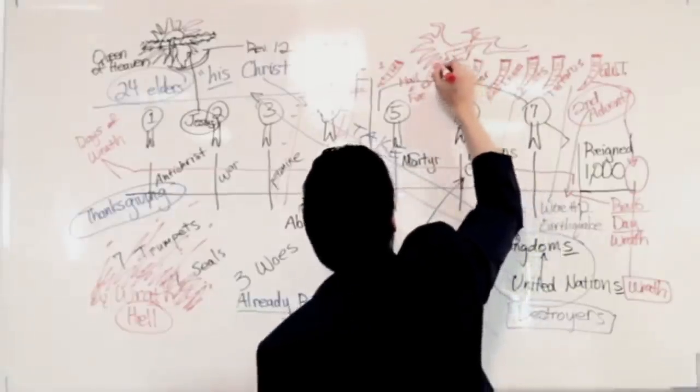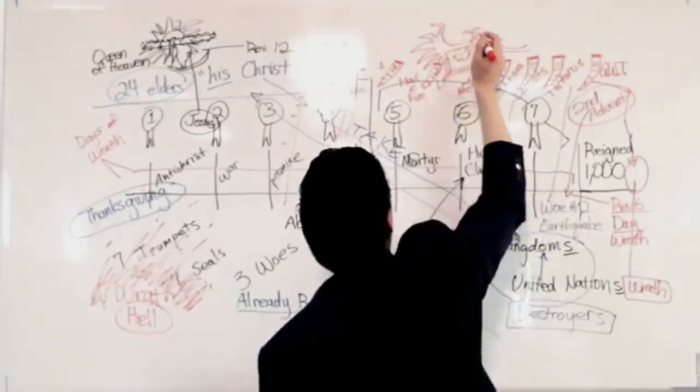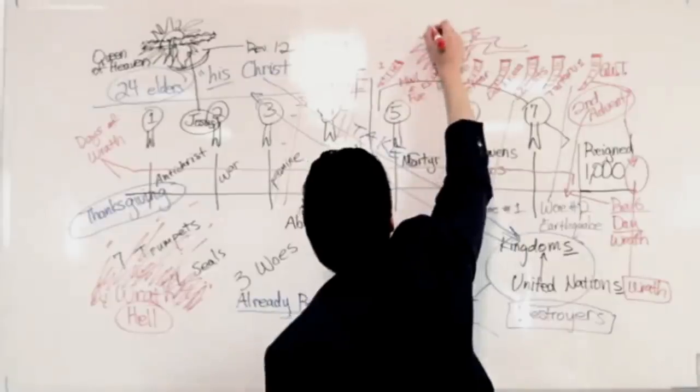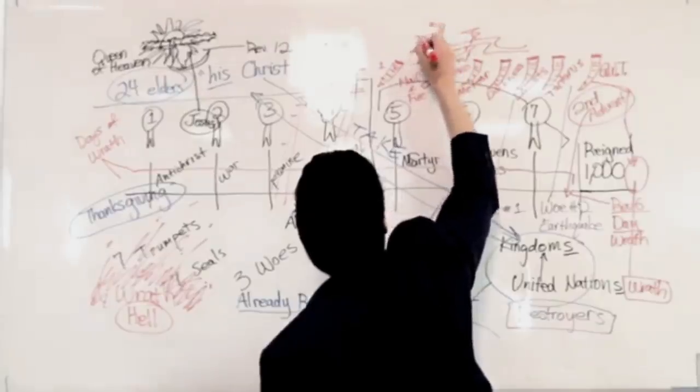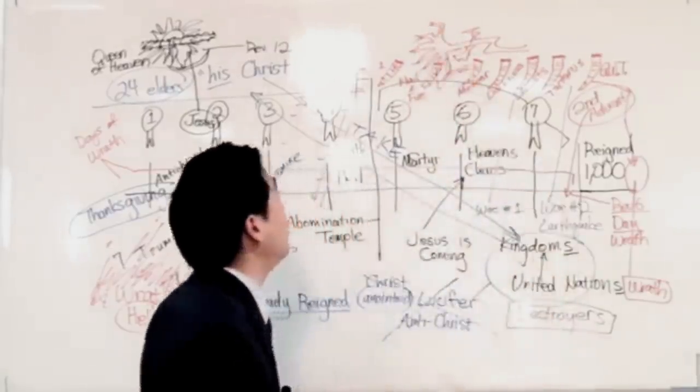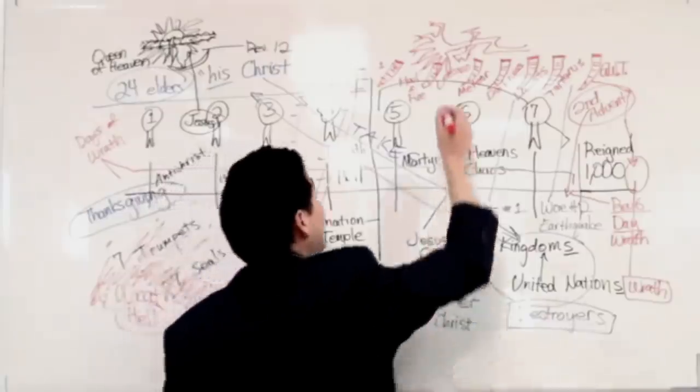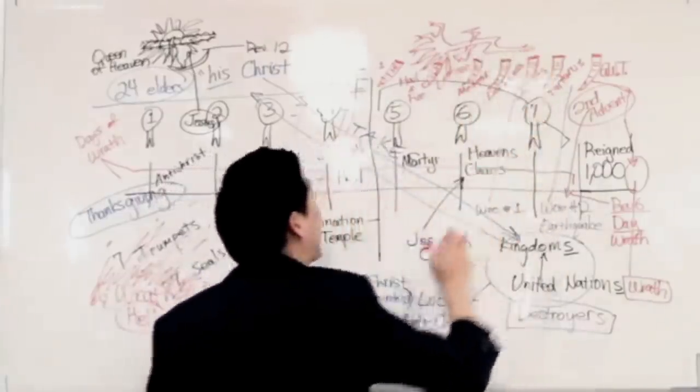Look at this creature, this being, this dragon. When he comes out, he comes out with seven heads: one, two, three, four, five, six, seven. And notice ten horns: one, two, three, four, five, six, seven, eight, nine, ten. So that's how it's going to look like. What are the seven heads and ten horns?